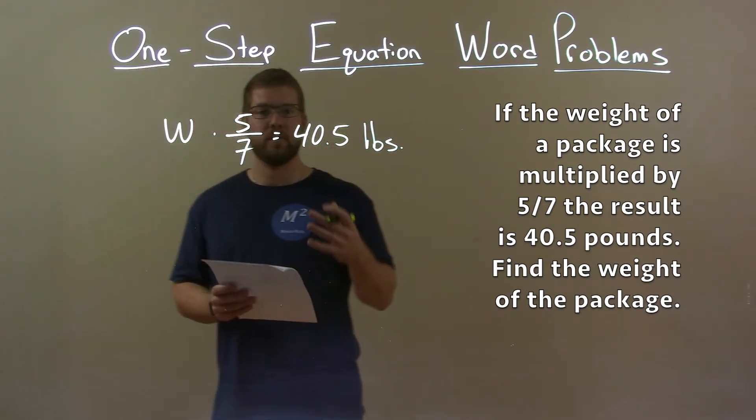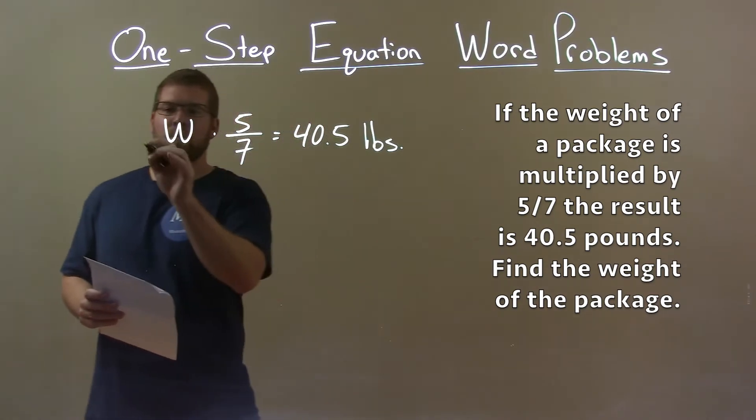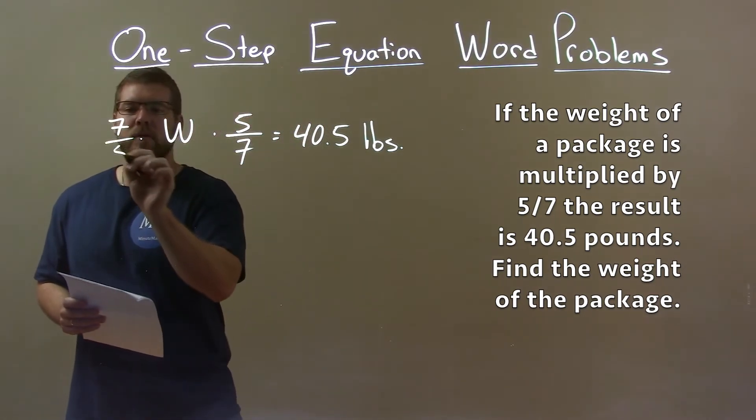Now, we want to solve for w, the weight of the package. Well, it's being multiplied by five-sevenths. To eliminate that five-sevenths, we can multiply both sides by the reciprocal, seven-fifths.